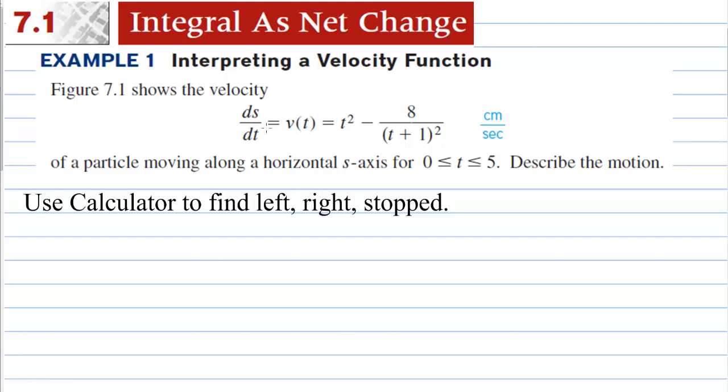We have ds/dt = v(t) = t² - 8/(t+1)² in centimeters per second of a particle moving along a horizontal s-axis for 0 to 5 seconds. Describe the motion. We're going to use our calculator to find the left, the right, and the stop.